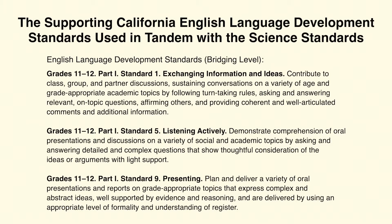Grades 11 and 12, Part 1, Standard 5, Listening Actively, where students demonstrate comprehension of oral presentations and discussions on a variety of social and academic topics by asking and answering detailed and complex questions that show thoughtful consideration of the ideas or arguments with light support. And Grades 11 and 12, Part 1, Standard 9, Presenting, where students plan and deliver a variety of oral presentations and reports on grade-appropriate topics that express complex and abstract ideas, well-supported by evidence and reasoning, delivered using an appropriate level of formality and understanding of register. Watch how students move from early levels of proficiency toward the bridging levels of these ELD standards throughout the lesson.